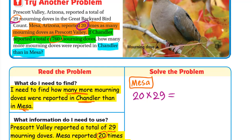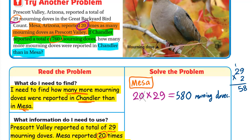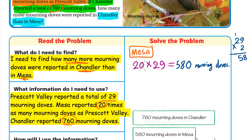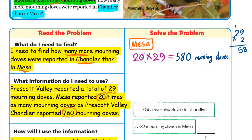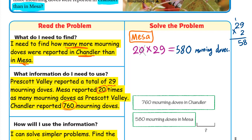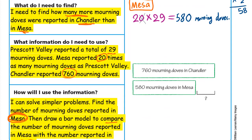Let's solve. Mesa's morning doves: 20 times 29. Write the 0 in the ones place, then multiply 2 times 29. 2 times 9 is 18: write 8, carry 1. 2 times 2 is 4, plus 1 is 5 — write 58. With the 0, the result is 580 mourning doves in Mesa.